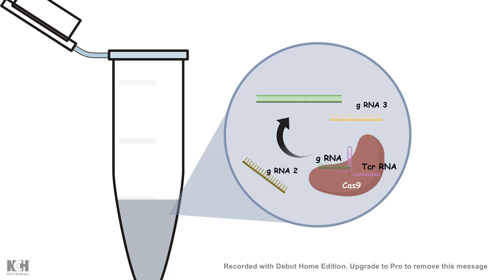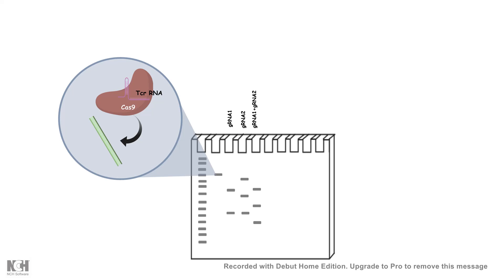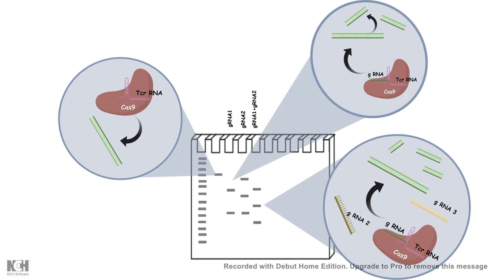If it is true, then in the agarose gel electrophoresis depending upon which type of guide RNA or which combination of guide RNA we are using, we are going to get different band sizes, and that's what scientists observed. Depending upon which type of guide RNA they are using, they're able to obtain different sizes and different lengths of the bands.